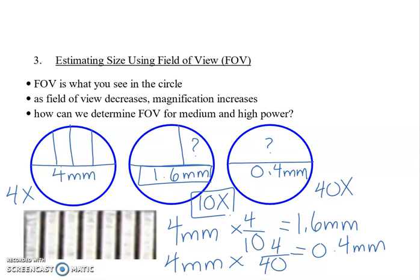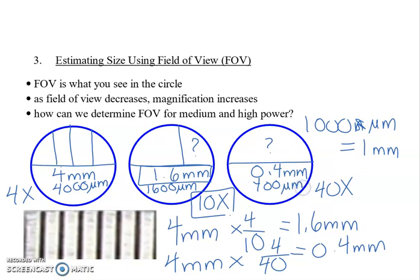So we're going to change it to micrometers. There's 1,000 micrometers in 1 millimeter. So that means I'm going to be reporting field of view as 4,000 micrometers low power, 1,600 micrometers on medium power, and 400 micrometers on high power.